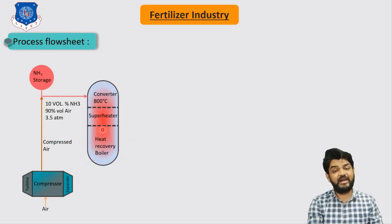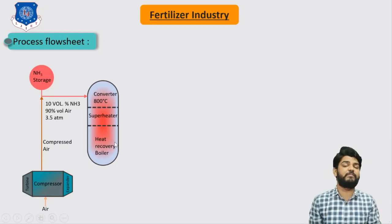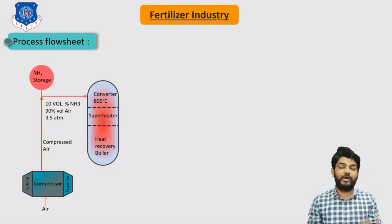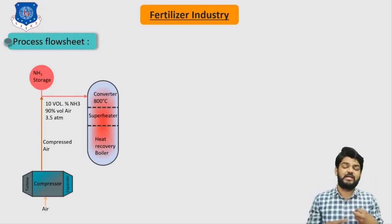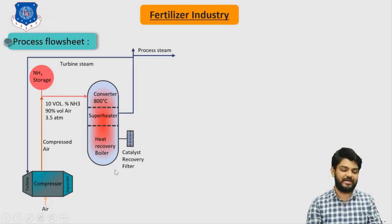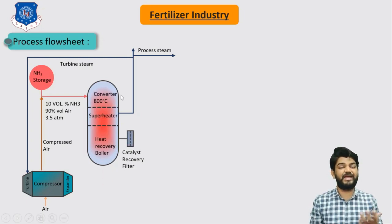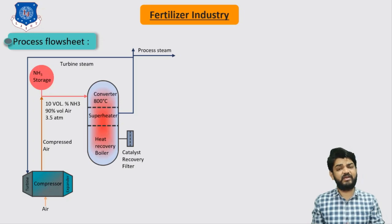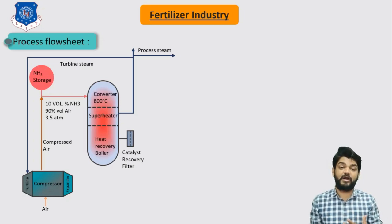Since this is a highly exothermic reaction, when the two reactants react they produce a large amount of heat. This converter is essentially a shell-and-tube type heat exchanger. In the tube side we provide a platinum-based catalyst to enhance the reaction, and the reaction also takes place inside the tubes. The heat of reaction is liberated to the shell side, where we pass water from the bottom section. As this water receives the heat of the exothermic reaction it is converted into steam, so we are utilizing the heat of reaction to produce steam.